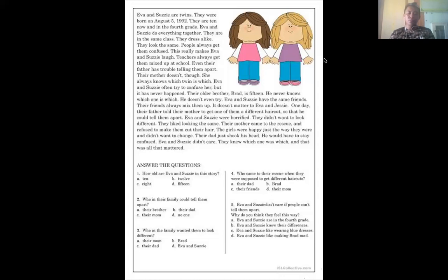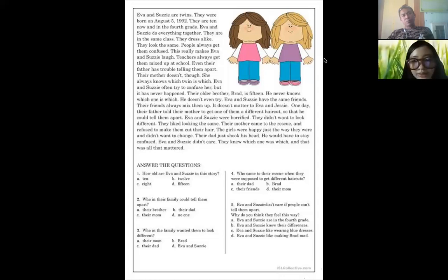One day, their father told their mother to get one of them a different haircut so Daddy could tell them apart. Eva and Susie were horrified. They didn't want to look different. They liked looking the same. Their mother came to the rescue and refused to make them cut their hair. The girls were happy just the way they were and didn't want to change. Their dad just shook his head. He would have to stay confused. Eva and Susie didn't care. They knew which one was which and that was all that mattered.